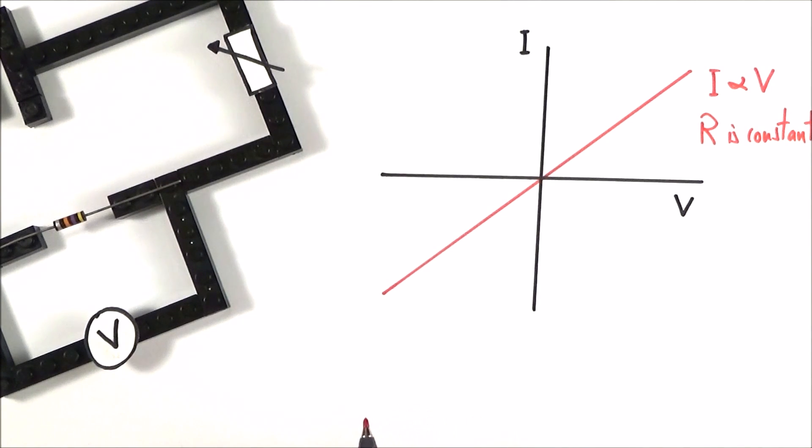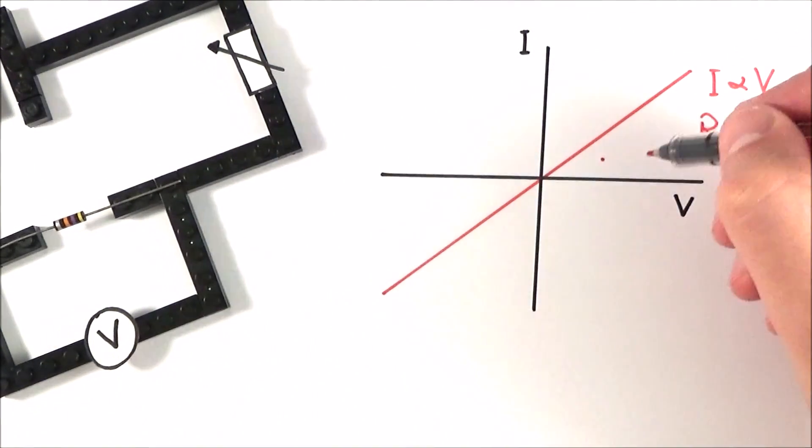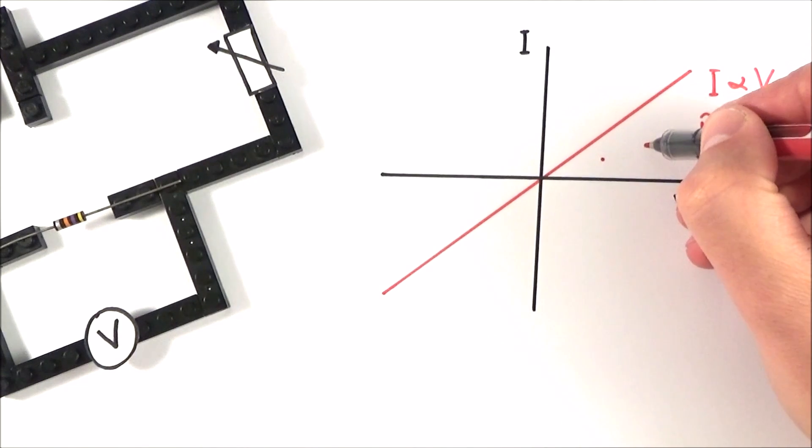Now perhaps we maybe have a different value of resistance which is a bit higher. If it's got a higher resistance, that means for the same potential difference the current that will flow is going to be less. This is always going to be the case. So every time you have the same potential difference it might only let maybe half the current through.